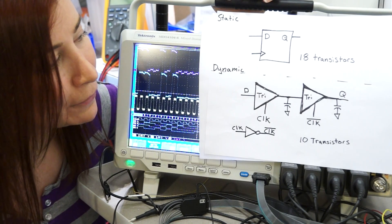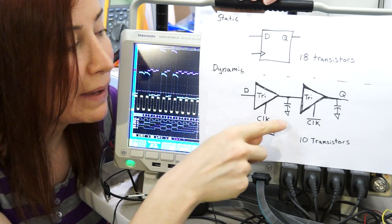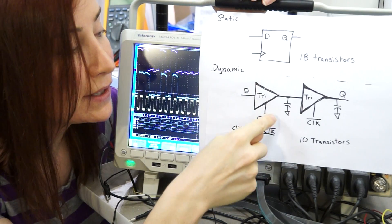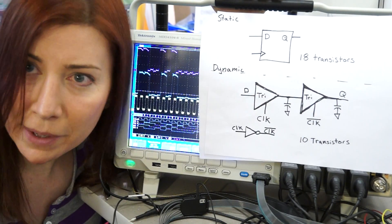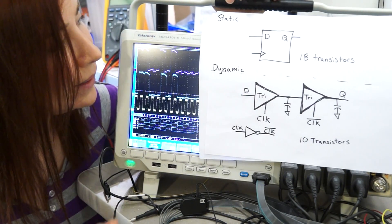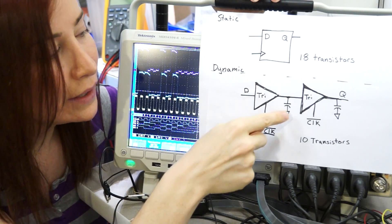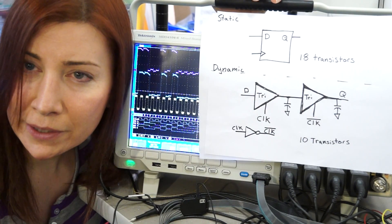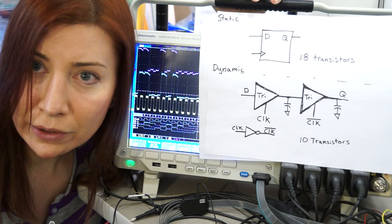Now a dynamic flip-flop relies on parasitic capacitance or even engineered capacitance between nodes to remember what its state is. So if you suspend the clock, these capacitors will eventually bleed off their charge and you'll lose your state.